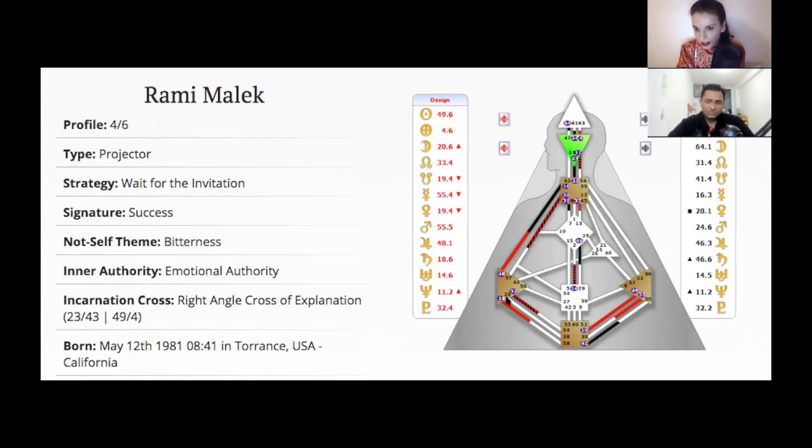And then let's see here, we have gate 32 of continuity. This is a very important gate to realize when something is worth pursuing, if this idea is worth continuing or not. And for an actor, I guess it's very important to know which roles to pursue and which roles not to pursue.